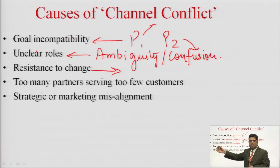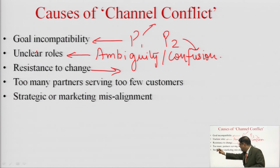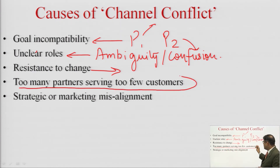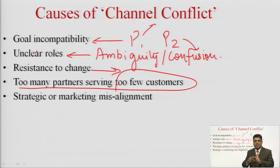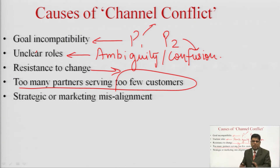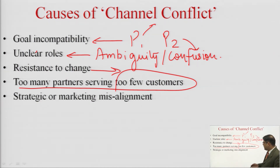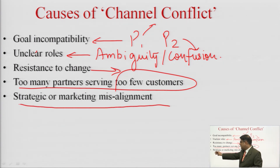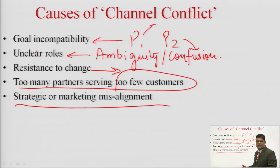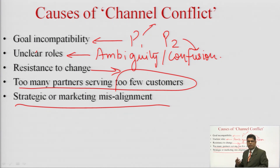Further causes include resistance to change — if channel partners are not adaptable to changing technology, channel conflict will arise. Also, if there are too many partners serving too few customers at the same level, there will be a rush for customers and discounts, contributing to channel conflict. Finally, strategic or marketing misalignment between partners can also be a cause of channel conflict. These things must be avoided to prevent channel conflict.